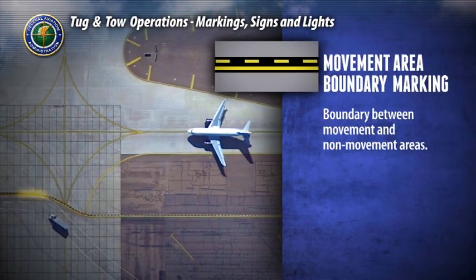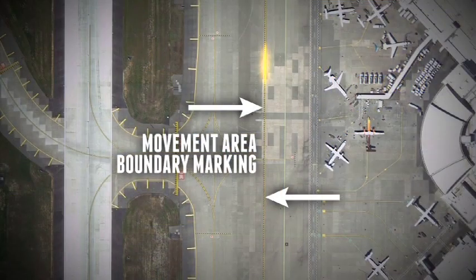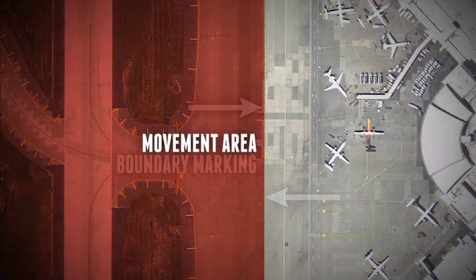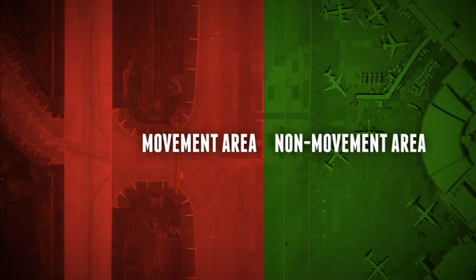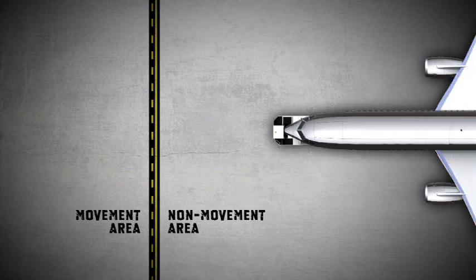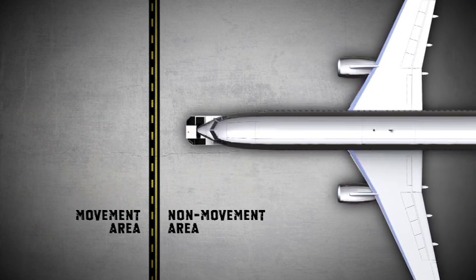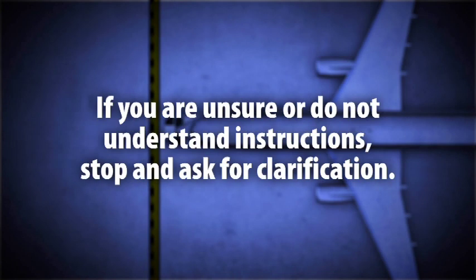The boundary between a movement and non-movement area is defined by a yellow dashed and solid striped line. Aircraft and vehicles inside the dashed yellow stripe may not proceed without air traffic control clearance. Aircraft and vehicles inside the yellow solid line do not need clearance to move but should only do so when conditions are safe. You cannot move from a solid line across a dashed line without air traffic control clearance. No one except air traffic control can give you clearance into or within a movement area. If you are unsure or do not understand instructions, stop and ask for clarification.